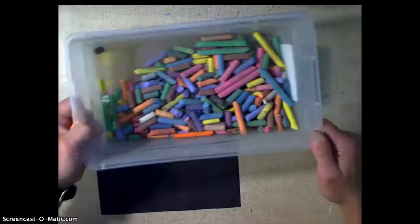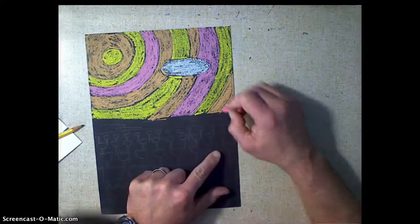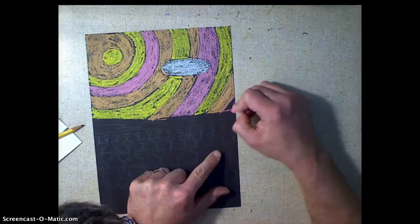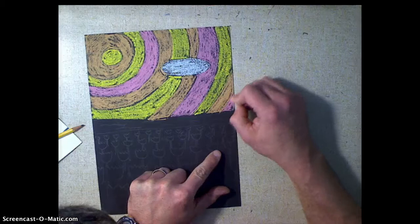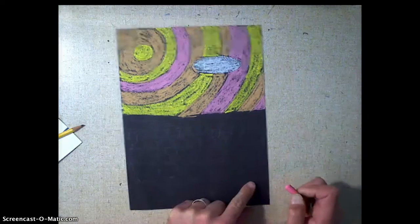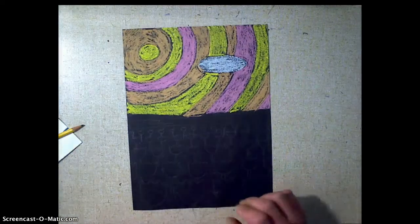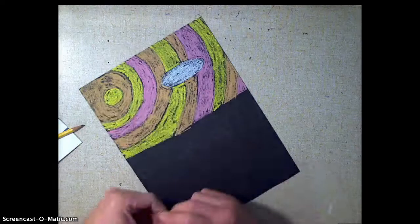And I'm using these chalks from the chalk bin, just regular colored chalk on the black paper. And it looks really cool. So I'm going to keep going with this. And then you can see how cool it looks so far. And then I'm going to start doing my water.